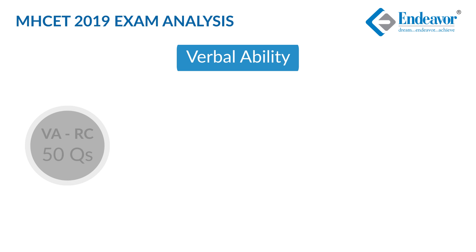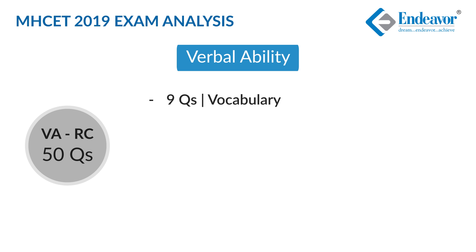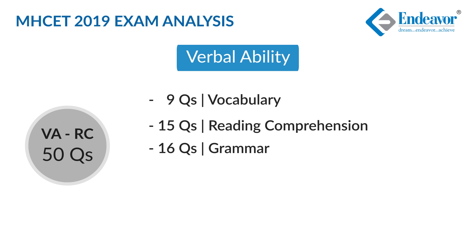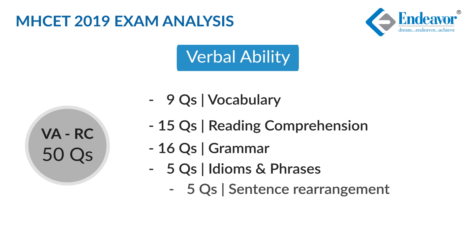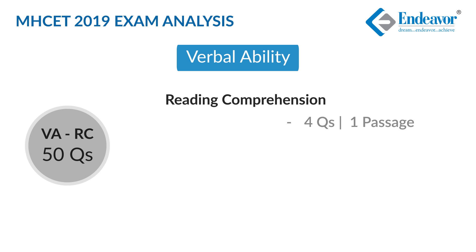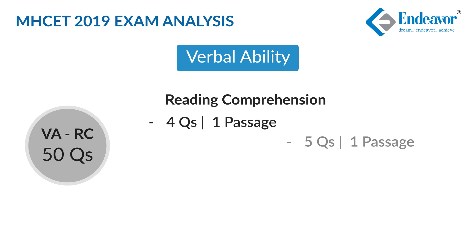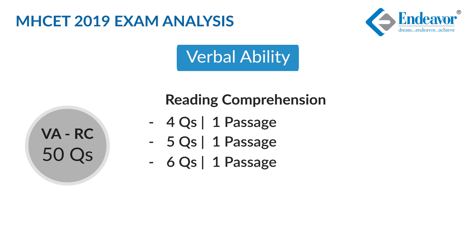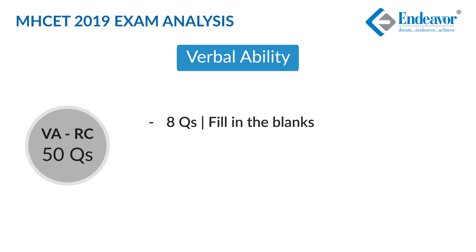The last section is Verbal Ability and Reading Comprehension. As expected, there was a good spread of questions of all types with a few unexpected inclusions and omissions. There were 9 vocab-based questions, 15 RC questions, 16 grammar questions, 5 questions on idioms and phrases, and 5 on sentence rearrangement. There was a good focus given to RC this time with 15 questions — one passage with 4 questions, another with 5 questions, and the third with 6 questions. Length of the RC varied throughout. There were 3 questions based on meaning of context and around 8 vocabulary-based questions in fill-in-the-blanks format, similar to cloze tests.